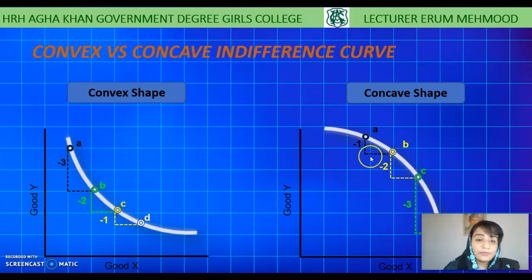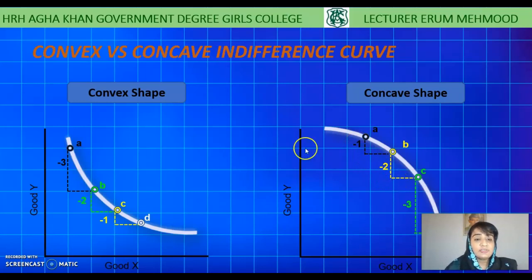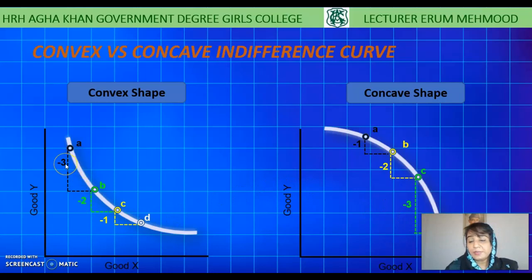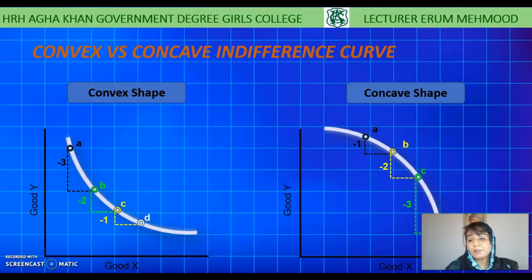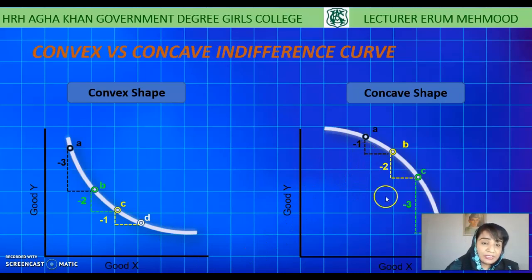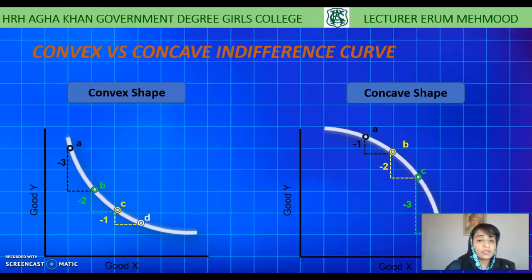In the concave shape, to get 1 additional unit of good X, the consumer is ready to give up 1 unit of good Y, then 2 units of good Y, then 3 units of good Y. You can see that in the convex diagram the consumption of good Y decreases to get 1 additional unit of good X — that is why the slope of the indifference curve diminishes. Whereas in the concave diagram, the consumption of good Y increases for each additional unit of good X, so the slope does not diminish. Therefore, it is clearly defined that the indifference curve has a convex shape.